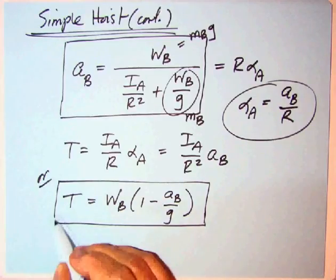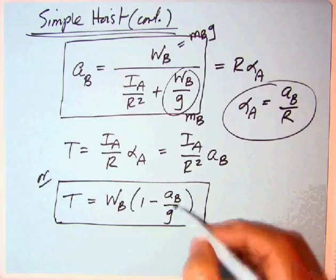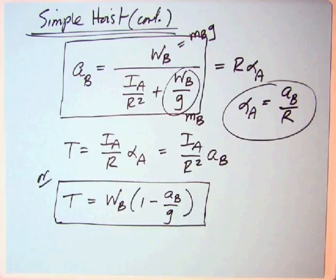Actually the second one, the one we didn't want to use earlier because it trapped A sub B, once you calculate A sub B, divide by G, whether it's 32.2 or 9.8, subtract that from 1, multiply by the WB that you're given, and there you are.